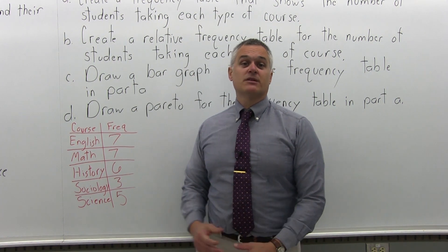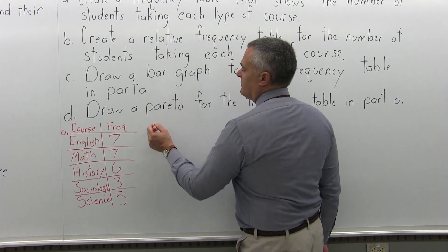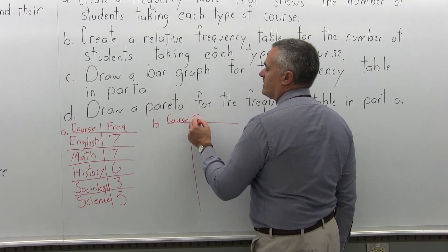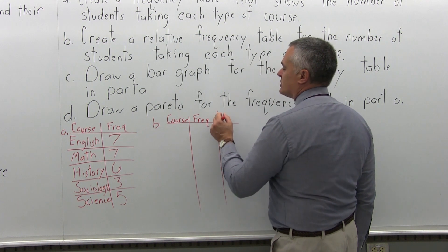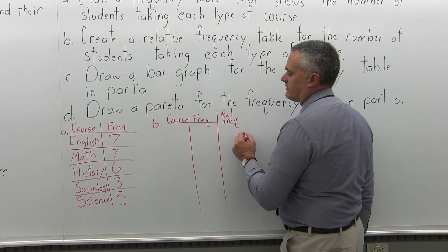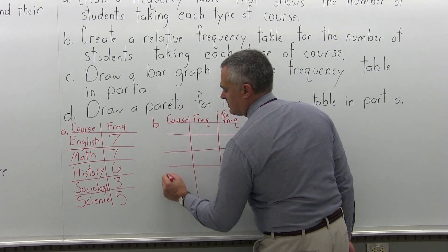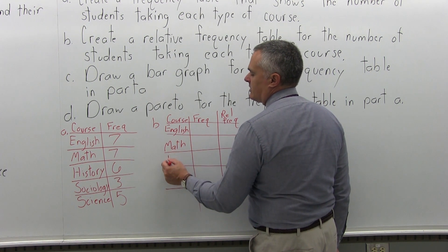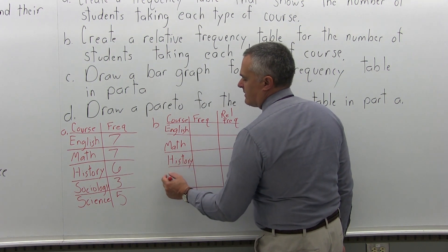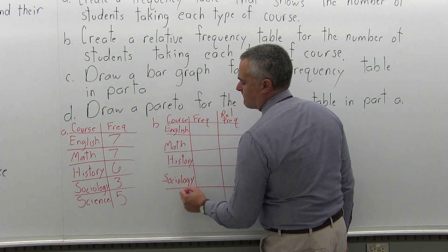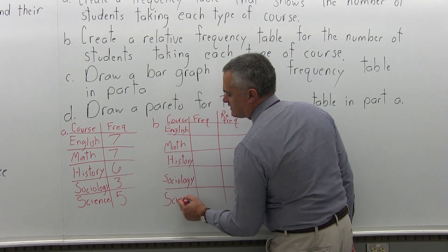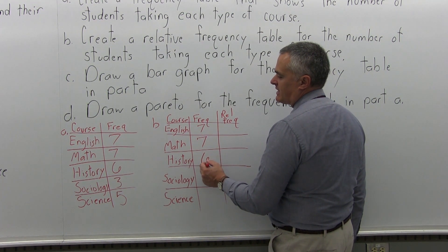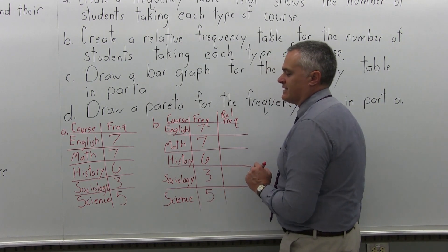Now Part B says make a relative frequency table. It's going to look similar but with three columns: the course, the frequency, and the relative frequency. The courses are English, Math, History, Sociology, and Science. The frequency is the same: seven students taking English, seven taking Math, six taking History, three taking Sociology, and five taking Science.